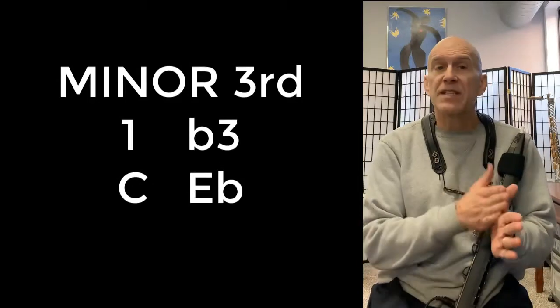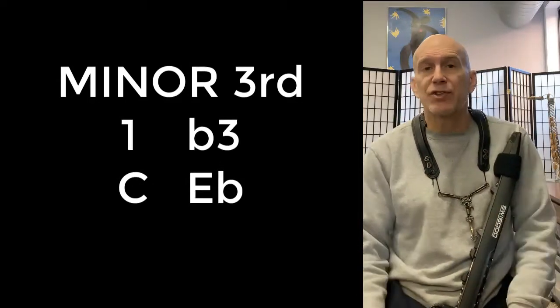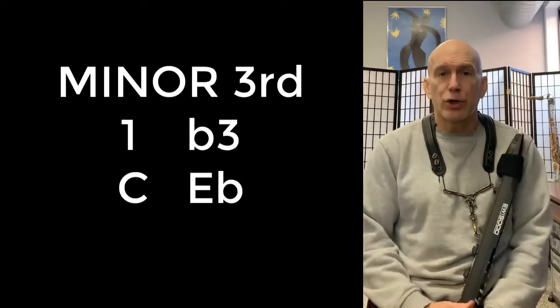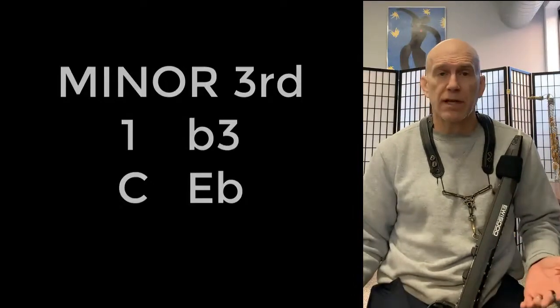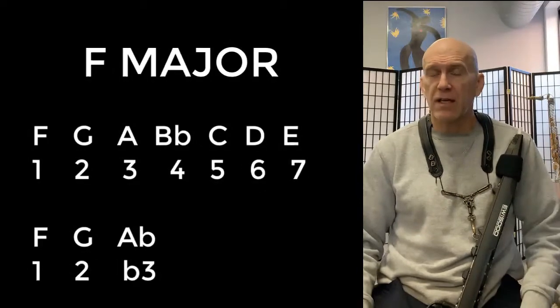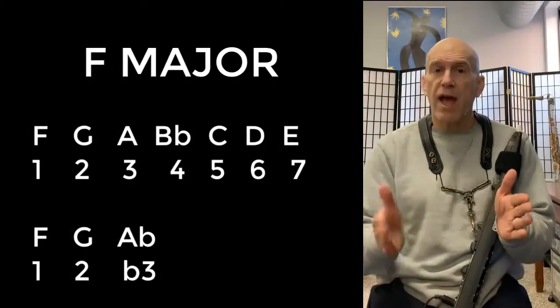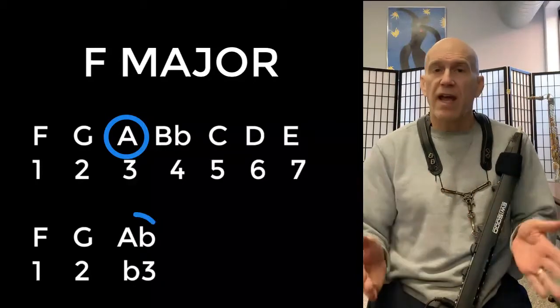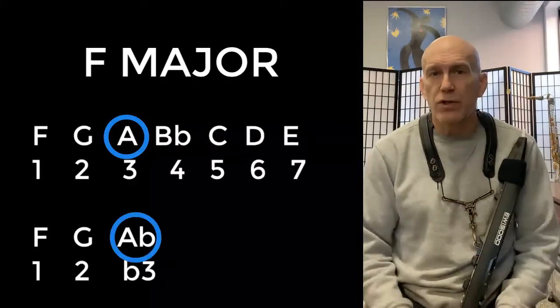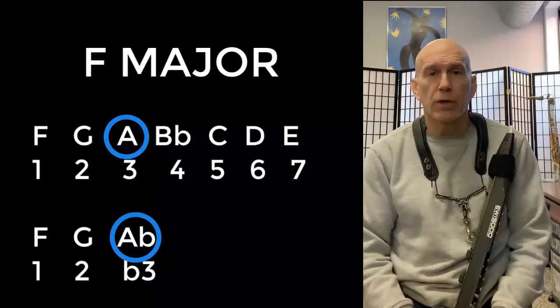So 1 to flat 3, C to E flat is considered a minor third. We can do that with any key. All right so let's go to the key of F and do the same thing. So a major third in the key of F would be F, G, A. A minor third in the key of F would be F, G, A flat and that's how the thirds that we're going to use today are going to work.